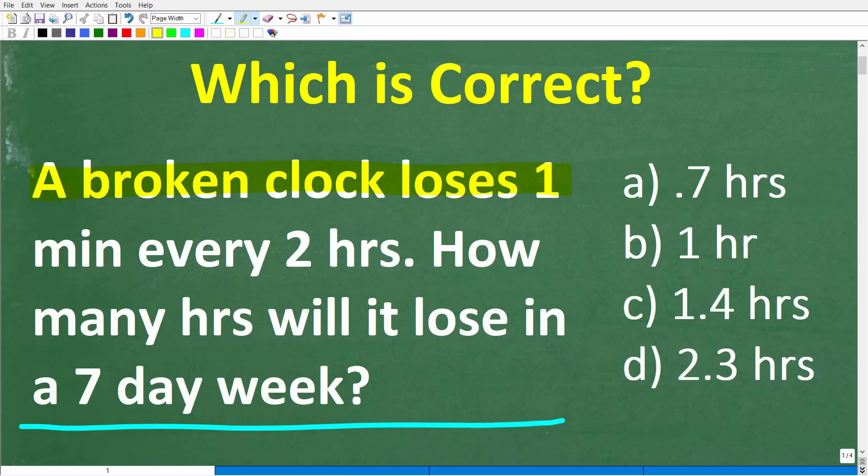A broken clock loses one minute every two hours. How many hours will it lose in a seven-day week? That is the problem. Feel free to use a calculator, but we do have a multiple-choice question here, and let's take a look at our answers.